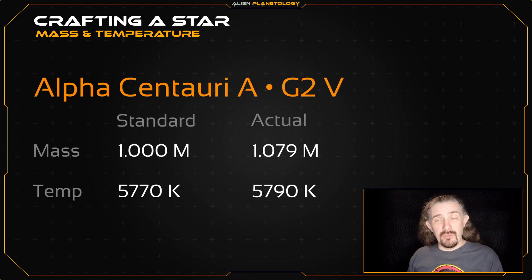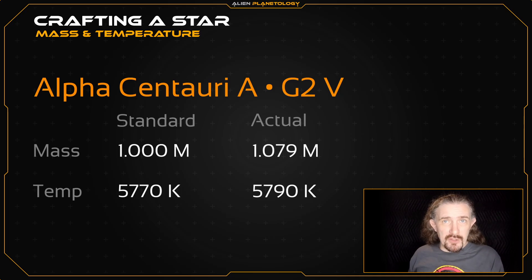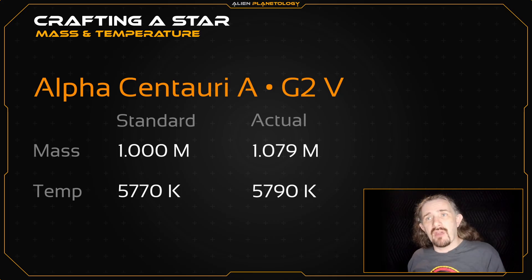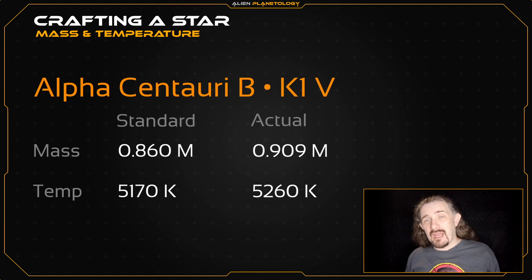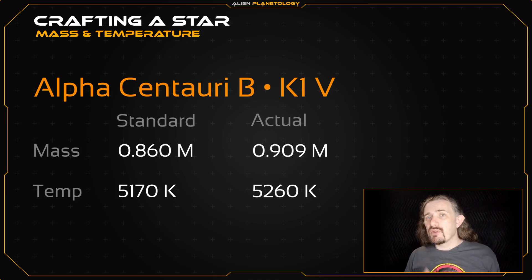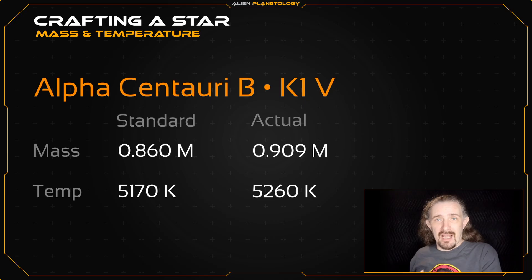Alpha Centauri A is a spectral type G2 main sequence star, just like our Sun. On the table, it has a standard mass of one solar mass and a temperature of 5,770 Kelvin. But if we look at its actual values, we find that while its temperature is within the standard range, its mass is a bit higher than what's quoted and more consistent with the mean given for a G0 star. Alpha Centauri B is a spectral type K1 main sequence star, and so has a standard mass of 0.86 solar masses and a temperature of 5,170 Kelvin. Once again, its temperature is close to the standard value, but its mass of 0.91 solar masses is a bit higher and more consistent with the mean mass of a G9 star.